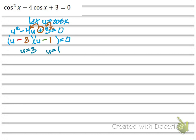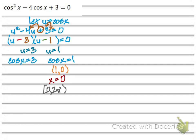Sub the cosine back in: cosine x equals 3 or cosine x equals 1. 3 is outside the range of cosine, so we can ignore it — cosine of x will never be 3. For cosine x equals 1, that must be the ordered pair (1, 0). The interval is 0 to 2π with 0 included, so x equals 0. If it had been the other way — with the bracket on 2π — the answer would be 2π.